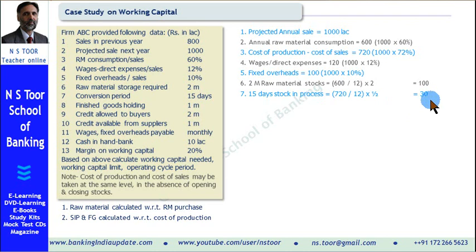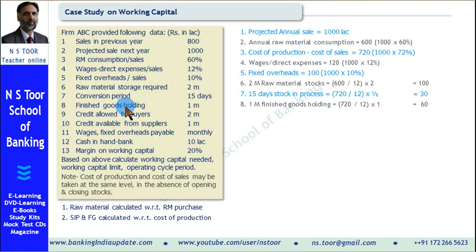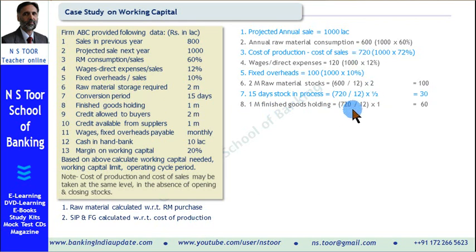Now the value of finished goods — finished goods holding is 1 month. It is calculated with reference to cost of production, which is 720. For 1 month it is going to be 60. So for 1 month finished goods holding, the value is 60.